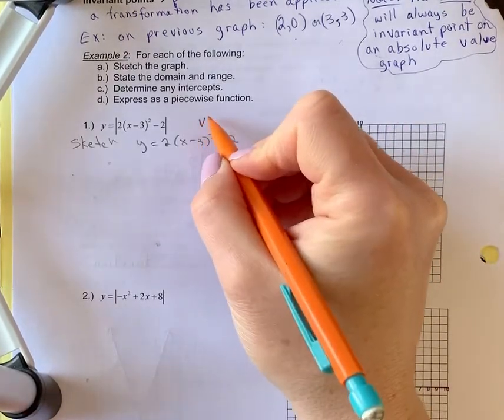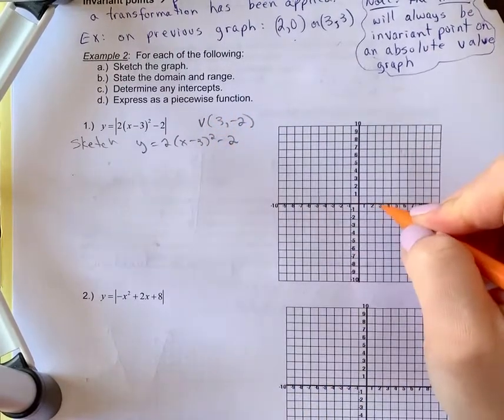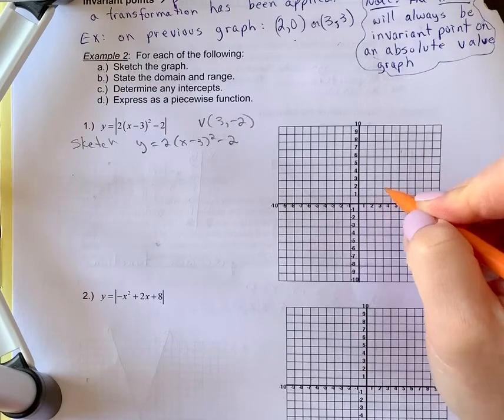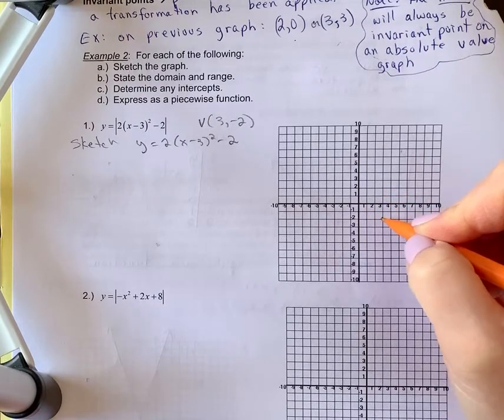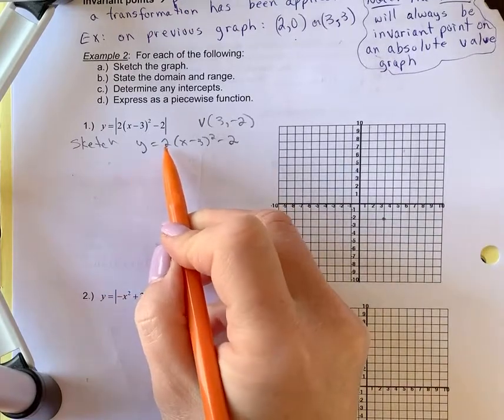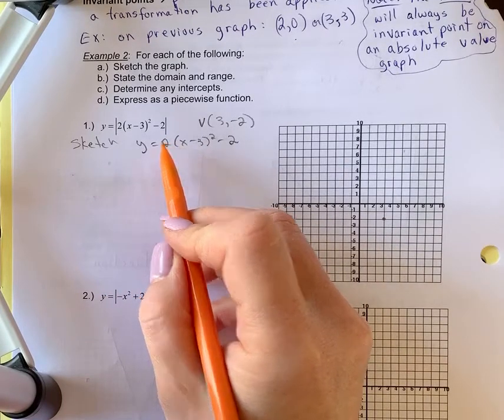So graphing this, remember the vertex is 3 and negative 2. Not that you have to write that down, but we'll visualize 3 and negative 2. So there's my vertex. Now this parabola opens up because it's a positive 2. The width is 2, which means there's a vertical stretch by a factor of 2.